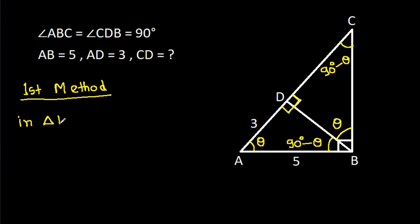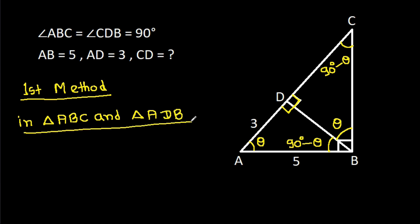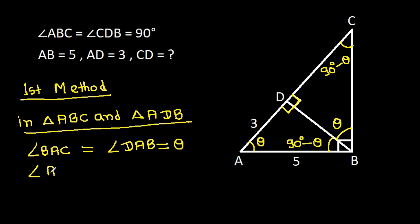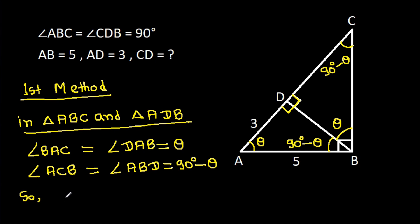In triangle ABC and triangle ADB, we have angle BAC is equal to angle DAB — that is theta — and angle ACB is equal to angle ABD — that is 90 degrees minus theta. So triangle ABC is similar to triangle ADB.